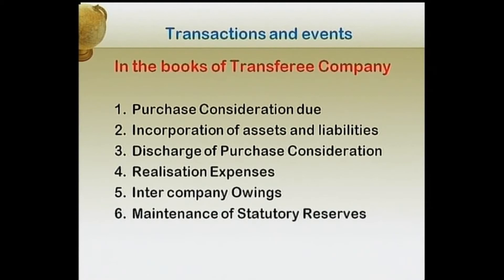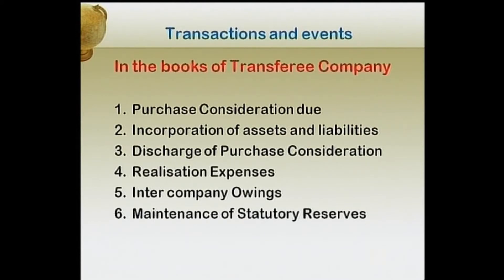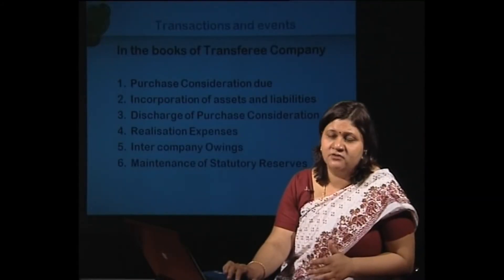In the books of the transferee company, the summary of entries is: first, make the purchase consideration due; second, incorporate assets and liabilities; third, discharge the purchase consideration; fourth, account for realization expenses; fifth, cancel inter-company owing with an adjustment entry; and sixth, if a statutory reserve needs to be maintained, pass the amalgamation adjustment entry.